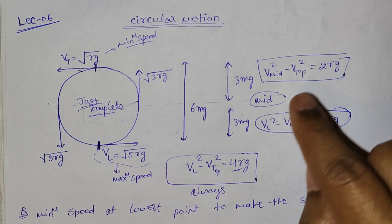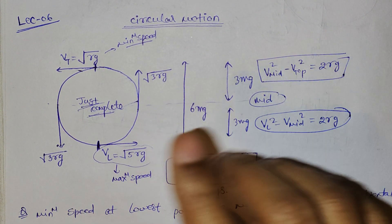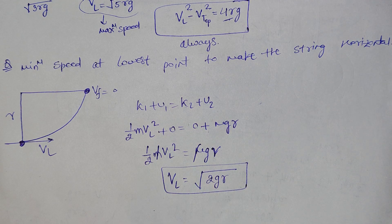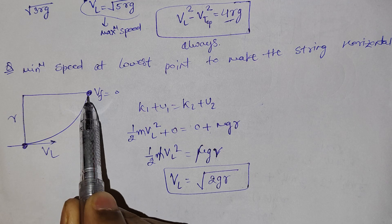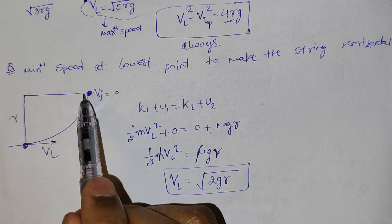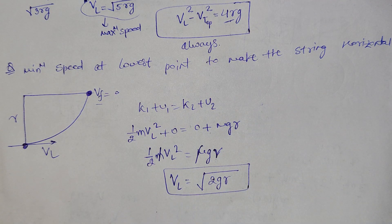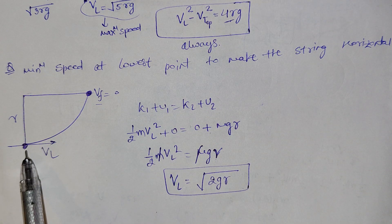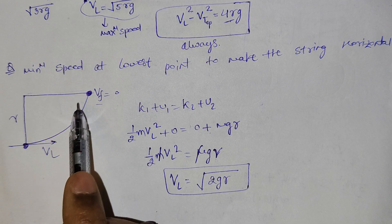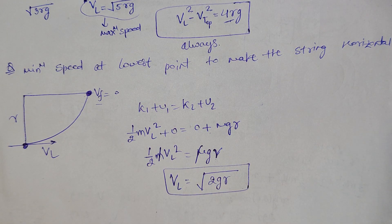These formulas are always valid in the case of vertical circular motion for just completing the circle. Now see this question: a ball connected to a string is released from the horizontal position with speed zero.